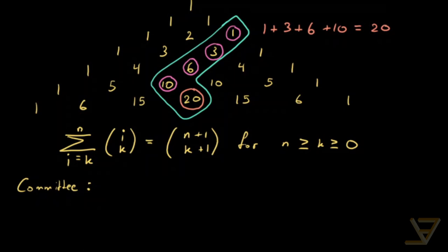The right side is pretty clear. What we do is choose k plus one people out of n plus one people.